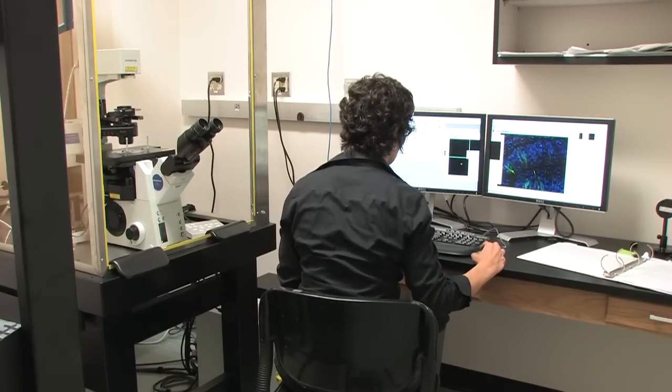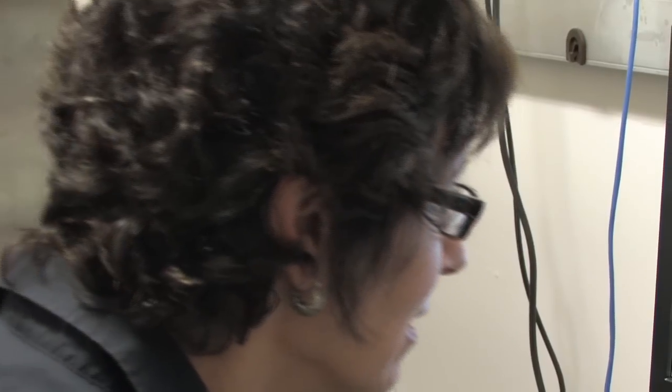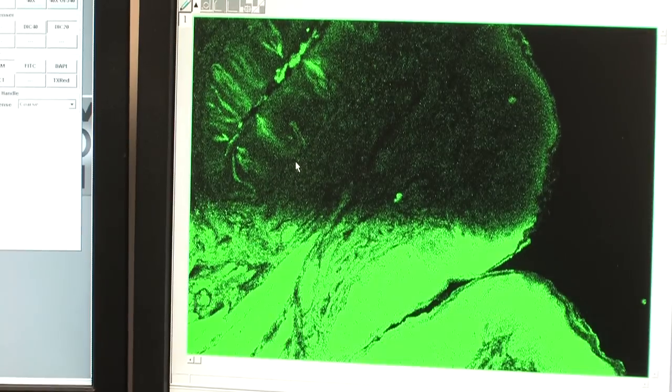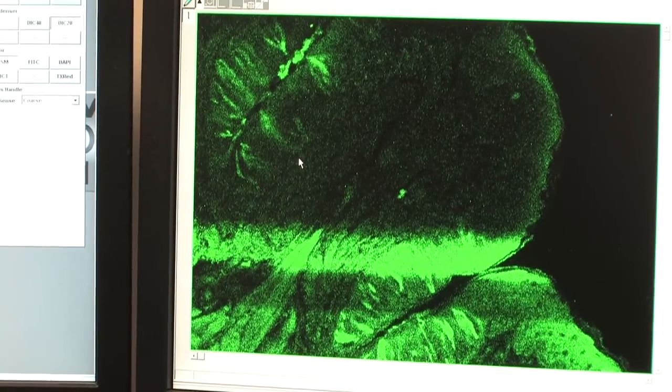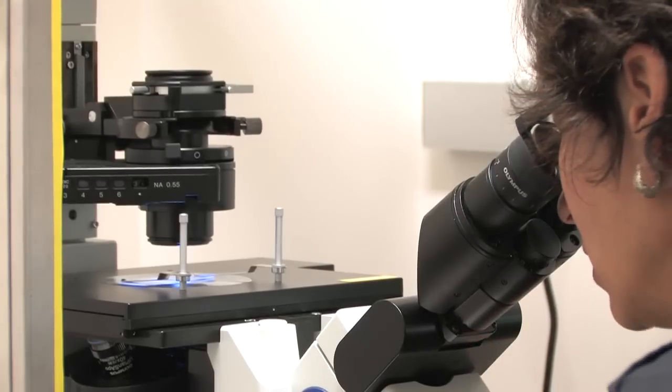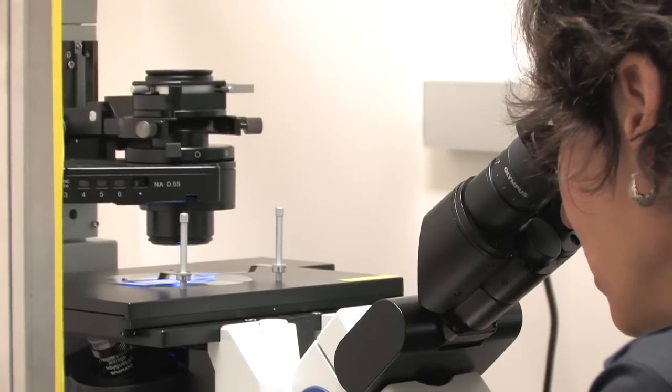The study of neurobiology is really the study of the basic processes of how the brain works. The way the brain works at the first step is to receive sensory information. So that's really where the most basic information is coming in. We're trying to understand what information is coming into the nervous system and how that information is being encoded and transduced.